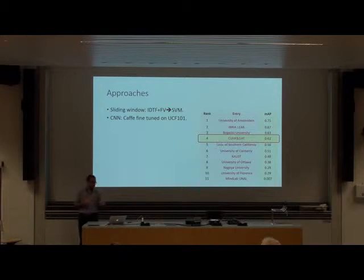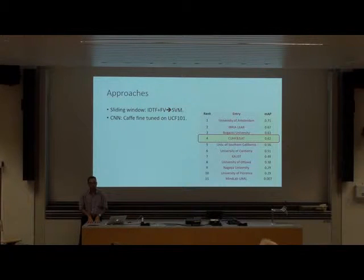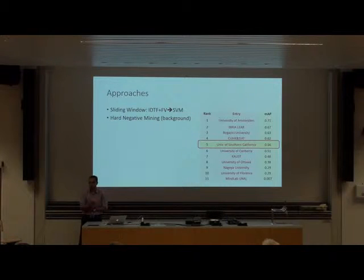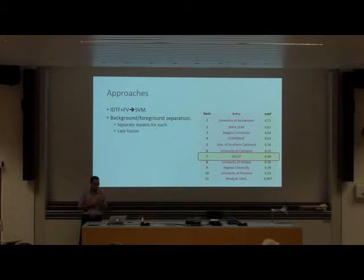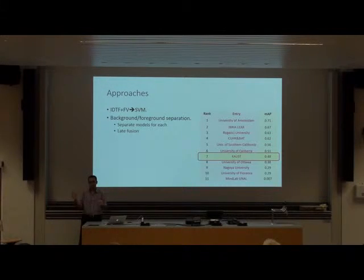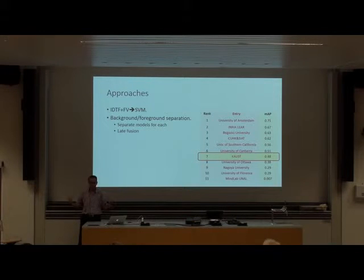Besides the sliding window, something notable from that paper is that they found CNN features very useful, even though the CNN was not initially trained for action recognition. Another method uses motion features and Fisher vectors, which appeared in almost all submissions. What they do differently is separate foreground and background regions and have separate pipelines for each, combining both rather than relying on just foreground or just background.